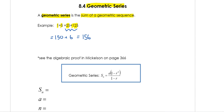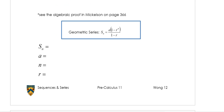When working with more difficult sequences, I may not be able to add up each individual term. So there is a formula that will help us find the sum of a geometric sequence. Here is one formula that can help. I'm going to pause the video and write down what each variable means.